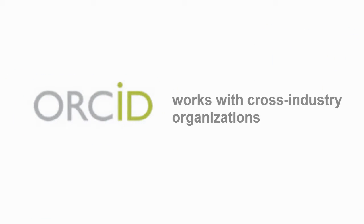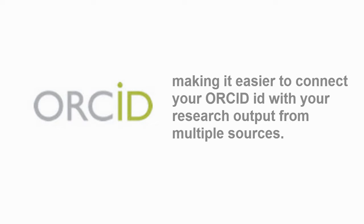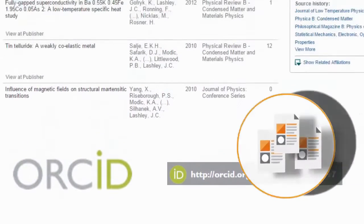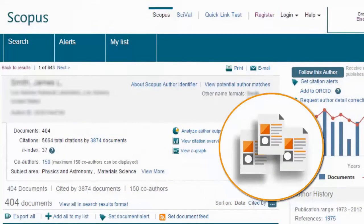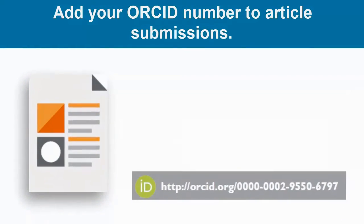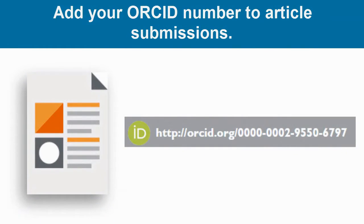ORCID.org also works with cross-industry organizations to help make it easier for you to connect your ORCID ID with your research output from multiple sources, including Scopus. Once you establish an ID, you can add your published work to your record directly from databases like Scopus.